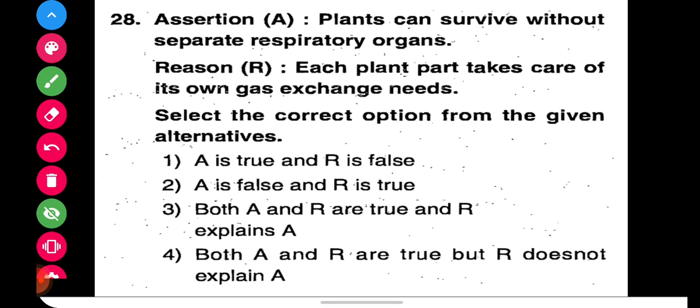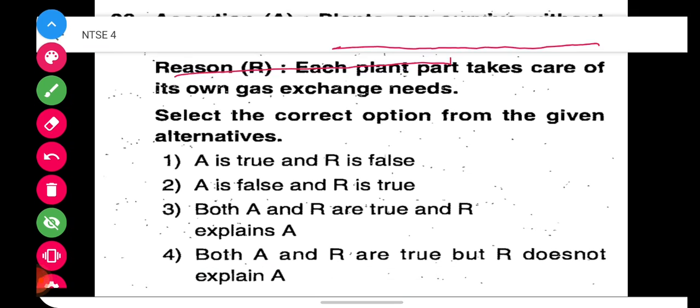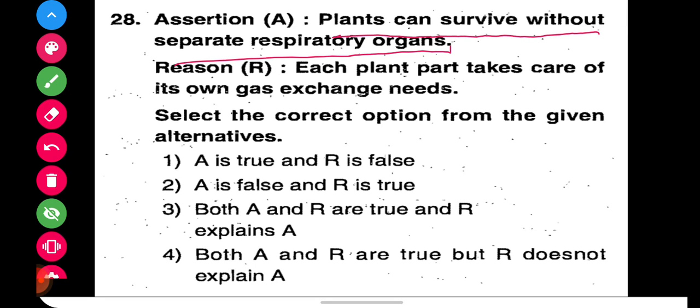Question 28: We have an assertion and reason type question. Assertion: plants can survive without separate respiratory organs. This is true because plants have no such specific organ. The reason is that each plant part takes care of its own gas exchange need, because every plant part manages its own requirements.